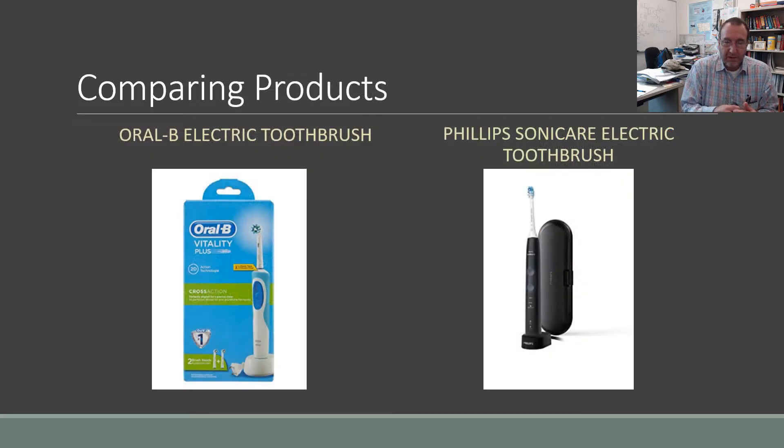We can also compare two products in an A-B type test. The example shown here is two electric toothbrushes from two different companies and we might evaluate how well they brush the teeth, how well they charge, how well you can change the heads on them.